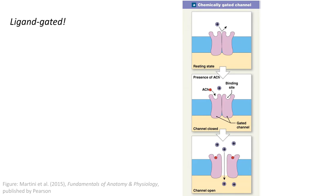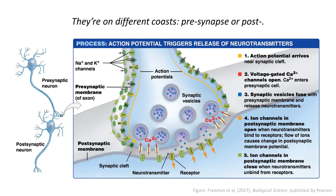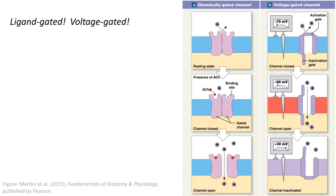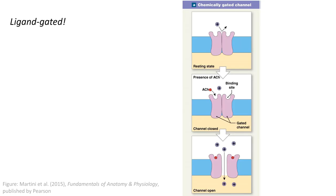Ligand gated, voltage gated — they're on different coasts, pre-synapse or post. Ligand gated, voltage gated. These two channel types produce voltage spikes. Ligand gated.